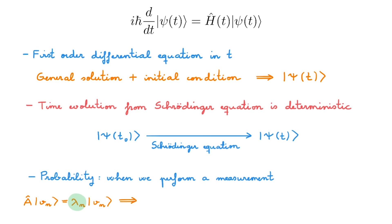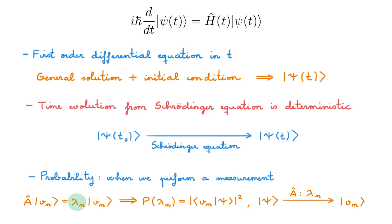All we can say is that if our system is in a state psi, then the probability of getting an eigenvalue lambda n is given by this expression. There is a second important point about measurements: if we start with a system in state psi and we do perform the measurement of quantity A, we will get some eigenvalue, say lambda n, as the outcome of the measurement. At this point, postulate 5 of quantum mechanics tells us that after the measurement, the state of the system changes dramatically and becomes V_n, the eigenstate associated with the eigenvalue lambda n that we got as the outcome of the measurement.